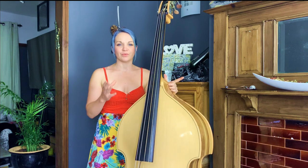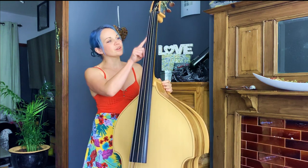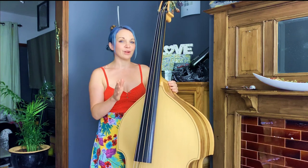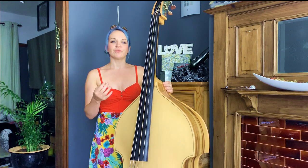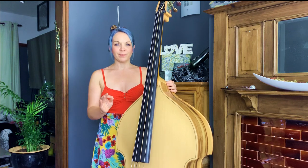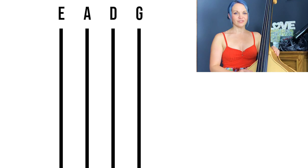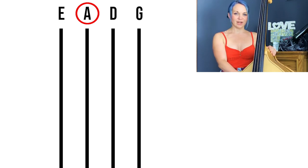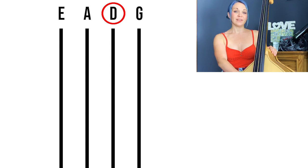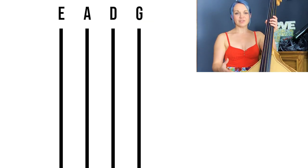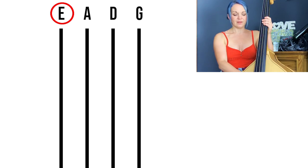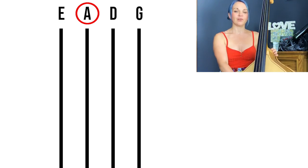Now let's look at how we find these notes on the fretboard. We're only going to look at the first section of the fretboard, because in that section you can find every note you need to play any song. The double bass has four strings, each with a name. We have the bottom string, which is the E string; the next string up is the A string; next up is the D string; and then the G string. Those names refer to the notes that string plays. So if you play the bottom string without pressing any fingers down, you're playing an E note. The next string up, without pressing any fingers down, you're playing an A.